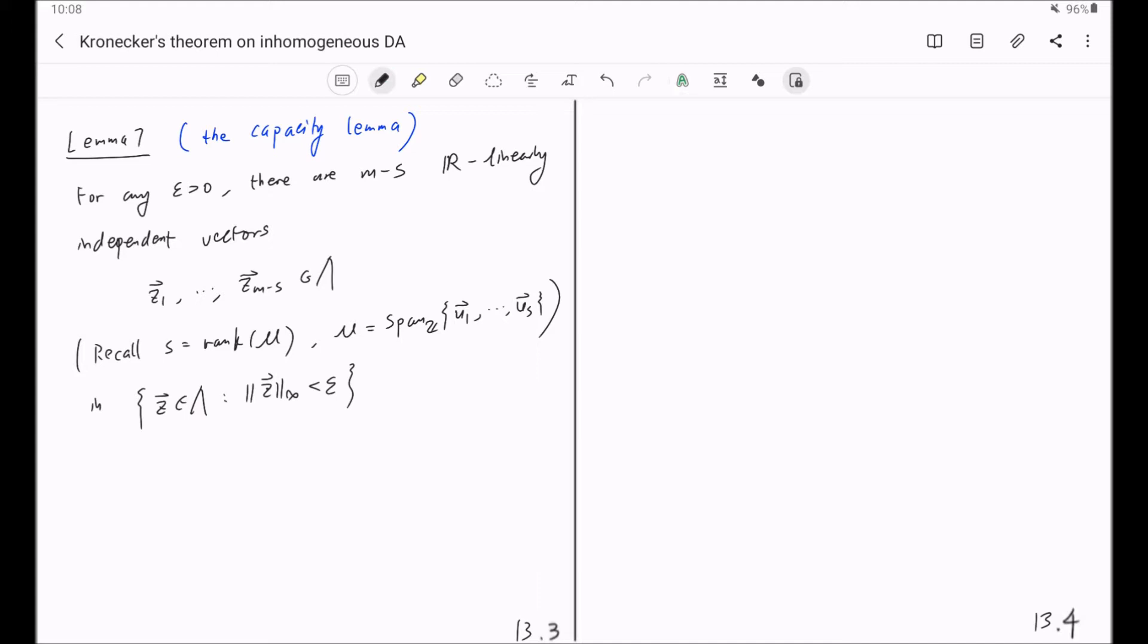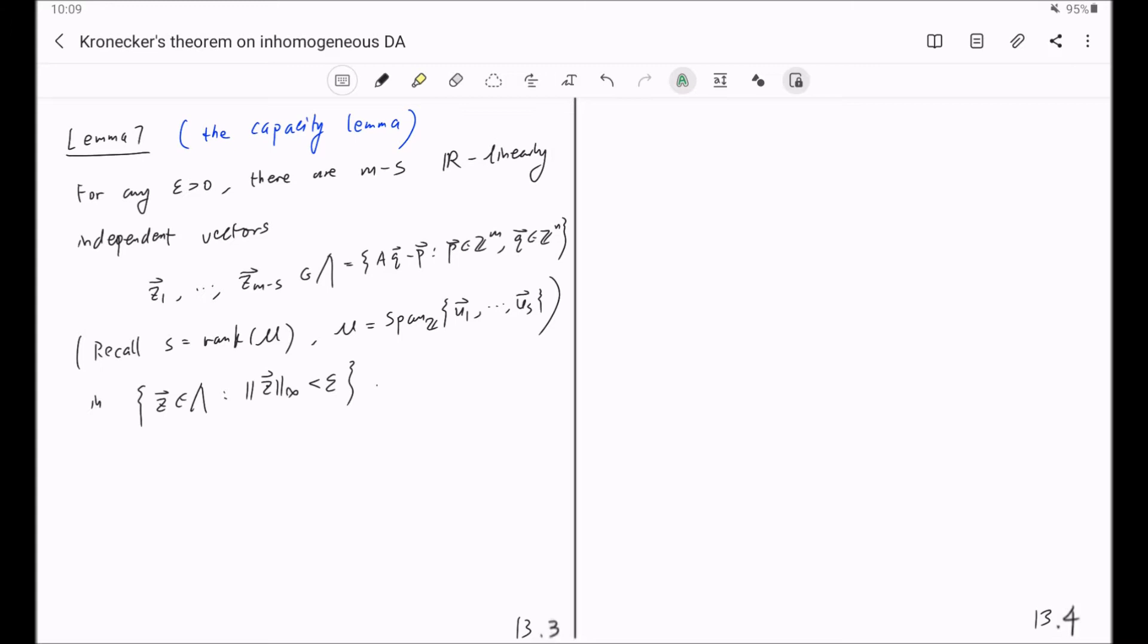Such that those linearly independent vectors Z1 through Z lambda are actually in the ball. Now you may understand why I call this the capacity lemma. This tells you, for any small positive number, our lambda, which is the collection of all AQ minus P's, will contain at least M minus S many R-linearly independent vectors in this small neighborhood at the origin with radius epsilon. This is really good about this lambda.